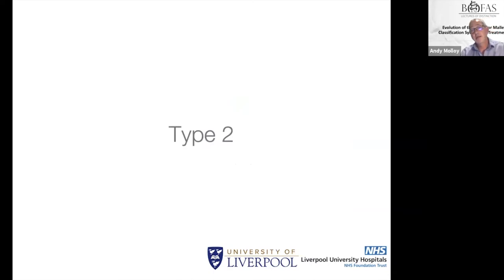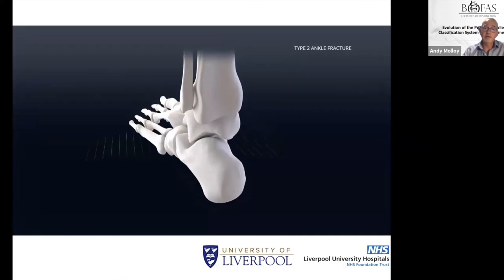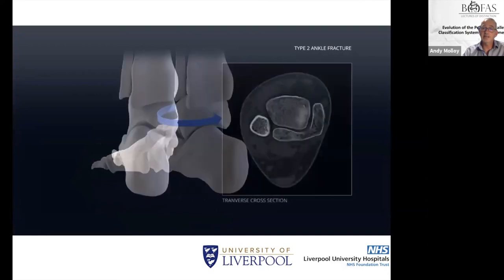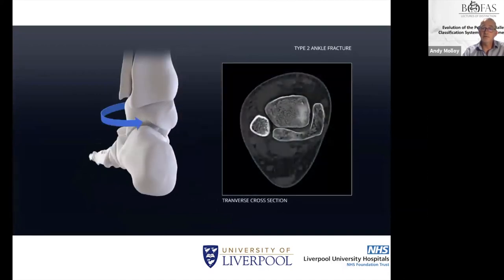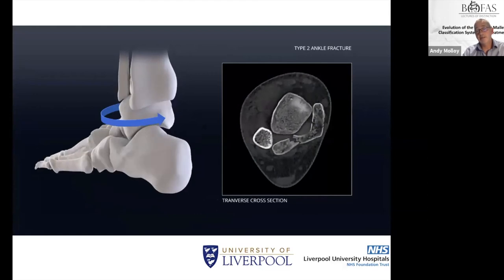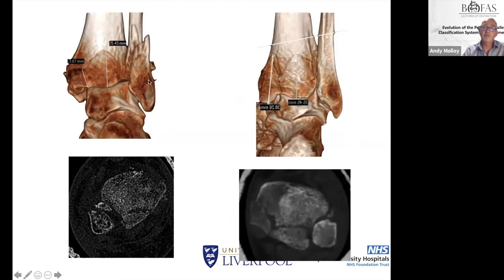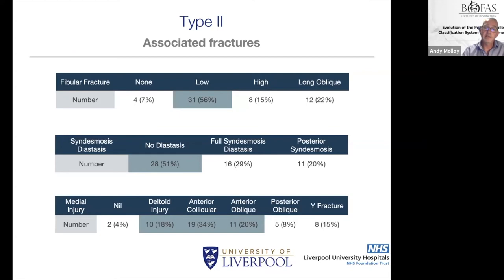The type 2 is a rotational pylon. External rotation of the talus knocks off the posterolateral corner, and if rotation continues, a second fracture line extends across, creating a two-part posterior fracture. CT scans confirmed reproducible fragment size and anatomy: the 2a is one part, the 2b is two parts. With these there is about a one in two chance of diastasis injury and more medial malleolar fractures occur.